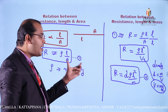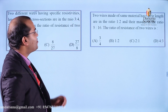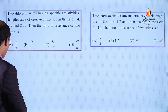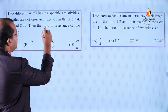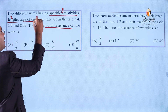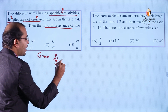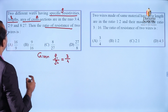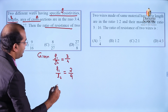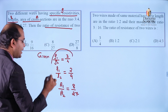Now let's apply these equations to solve the questions. For question 1, the given information is: the ratio ρ1/ρ2 equals 3/4, the ratio L1/L2 equals 2/9, and the ratio A1/A2 equals 8/27. Using the relation R equals ρL divided by A, the resistance ratio R1/R2 equals (ρ1/ρ2) × (L1/L2) × (A2/A1).